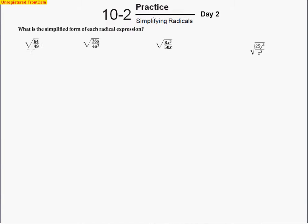If we have just one radical sign, we can treat this as two separate radicals and take the square root of 64 and the square root of 49 separately. The square root of 64 is 8, the square root of 49 is 7, so 8 sevenths would be our answer.